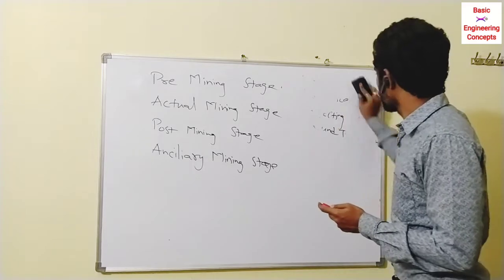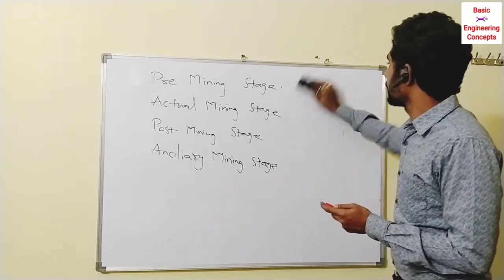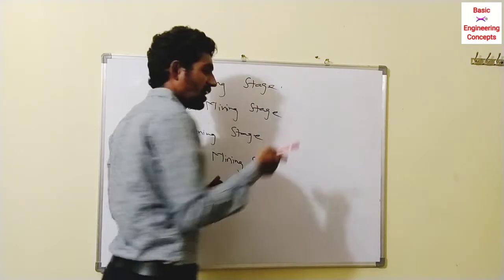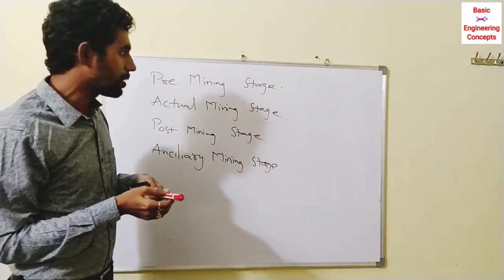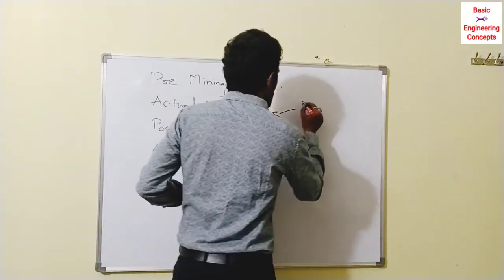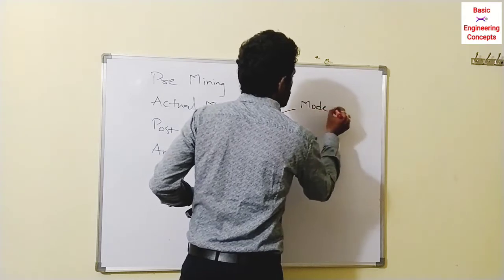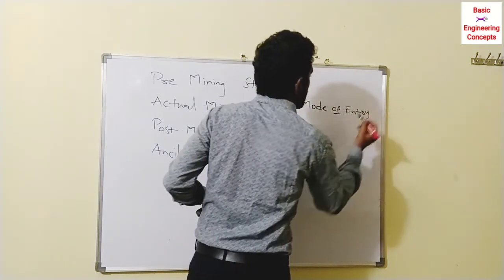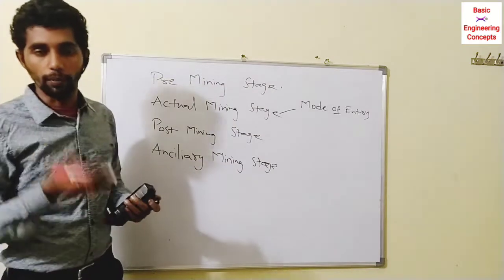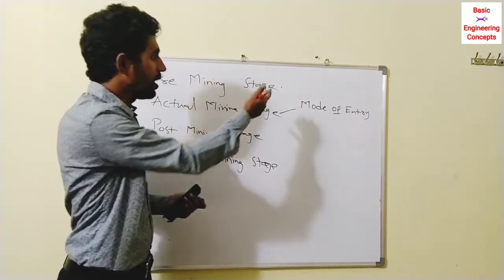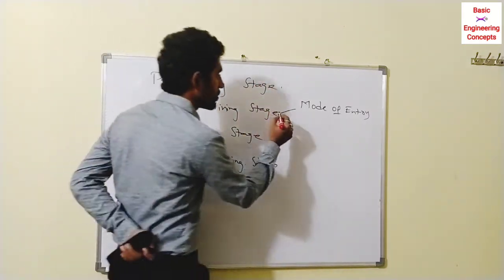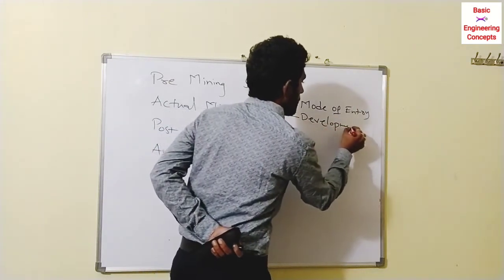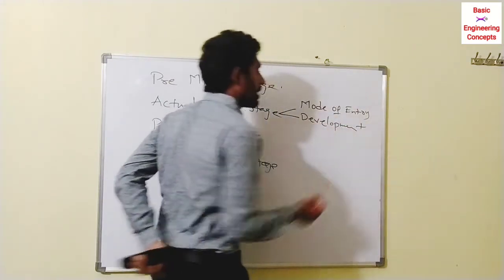The actual mining stages consist of three basic stages. First of all, we have to reach the mineral deposit — this involves the mode of entry. So the mode of entry refers to how we access and reach the mineral deposit. The next step is the development stage.